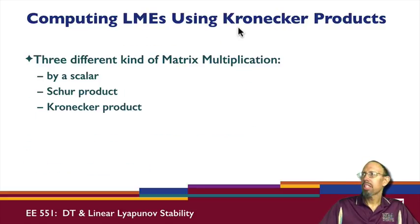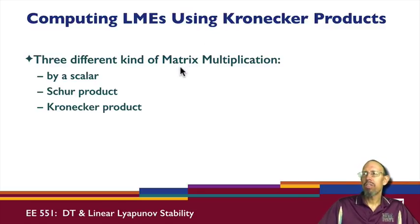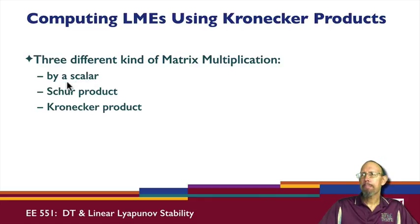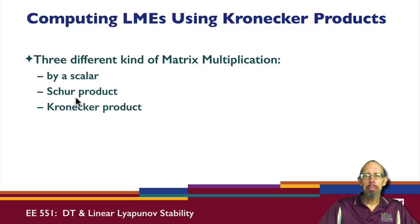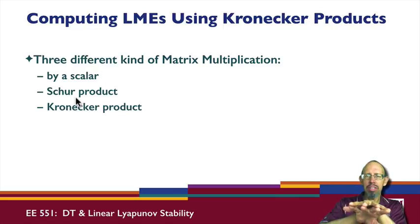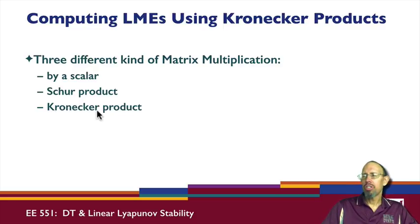So what about Kronecker products — what exactly is this? When we think of matrix multiplication, there are actually three different kinds. There is multiplication by a scalar, where you multiply every element in the matrix by that scalar. There is the standard matrix product — row times column, multiply matching elements and add them together. And then there is the Kronecker product.